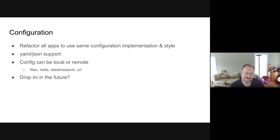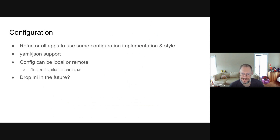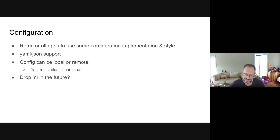You can do it however you used to do it before — they can still be locally on disk. This brings up the question: will we drop INI support in the future? YAML and JSON are just so much more expressive and easier to use. Not for 5.0, but maybe for 6.0 we might drop INI support. We're still talking about what we're going to do.